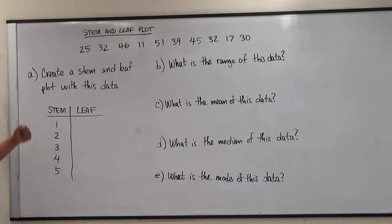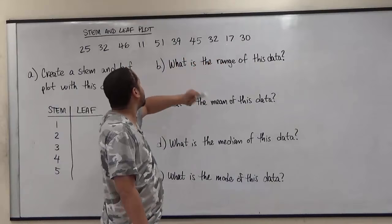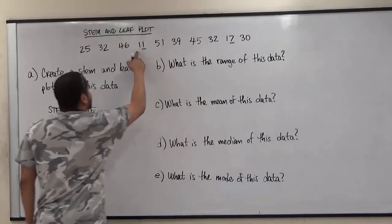So now for the stems we're going to start with the stem of ten and look for how many numbers begin with one digit. In our case we have eleven and seventeen, and these have to be arranged in order. So our first leaf is going to be one and our second leaf is going to be seven.